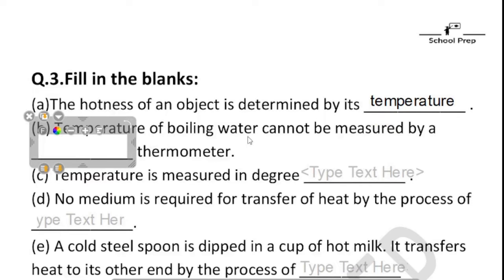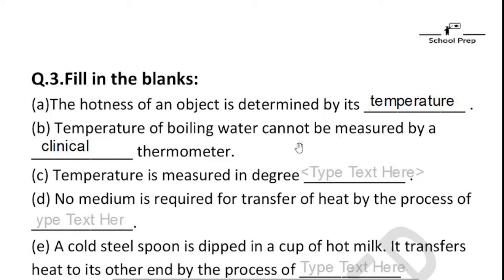Next fill in the blank: the temperature of boiling water can be measured by a clinical thermometer? The answer is no, because the reading range of a clinical thermometer is only 35 to 42 degrees Celsius, and the boiling temperature of water is 100 degrees Celsius. So boiling water temperature must be measured using a laboratory thermometer.